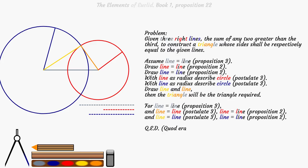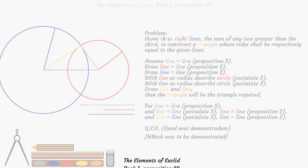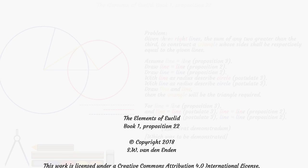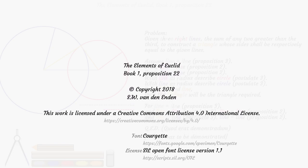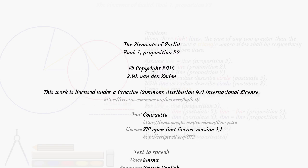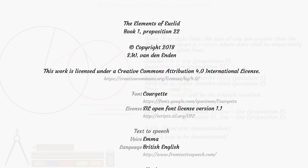Q.E.D. The red line is equal to the yellow, and it will be equal to the blue line. And the blue line is equal to the yellow line.